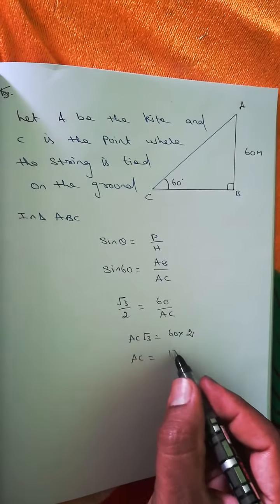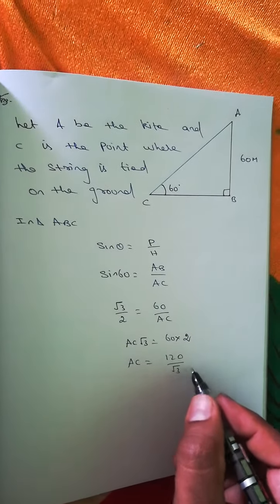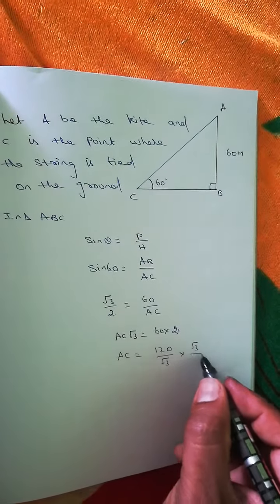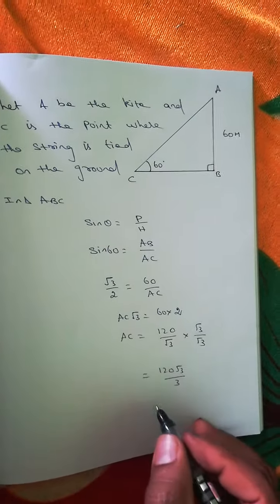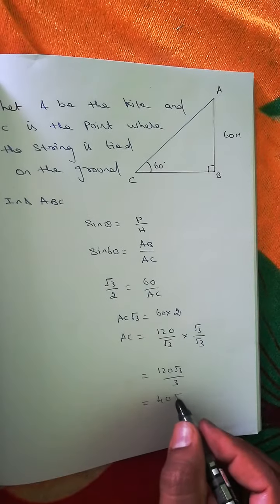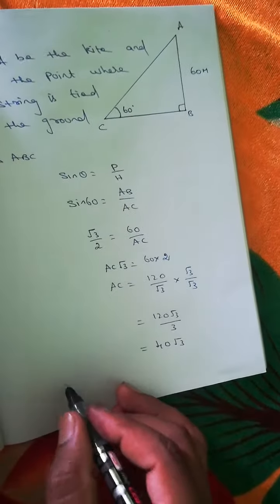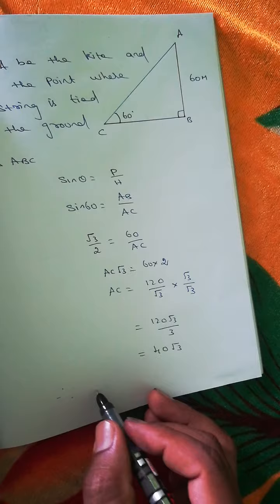AC equals 120 by root 3. Multiply both sides by root 3 over root 3. We'll get 120 root 3 by 3, which equals 40 root 3.